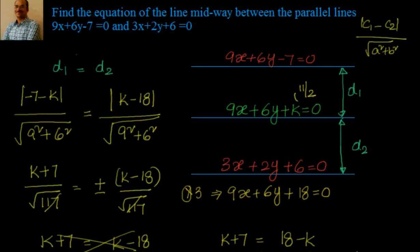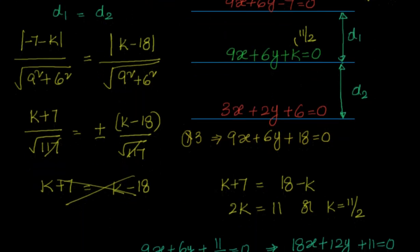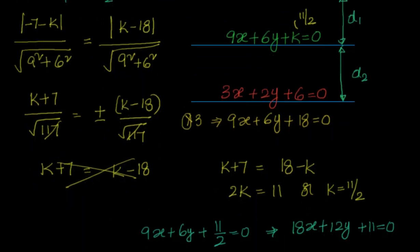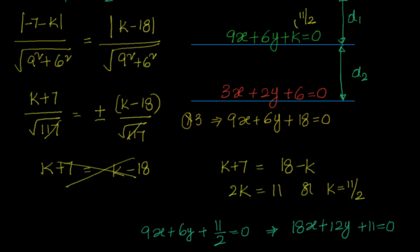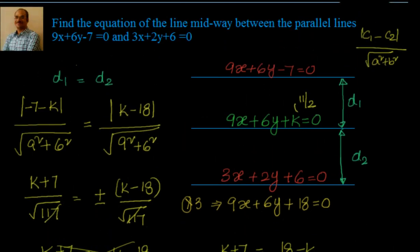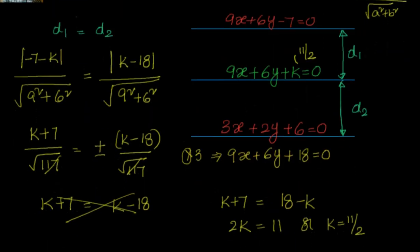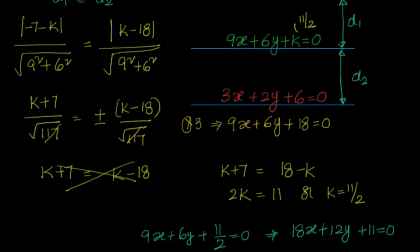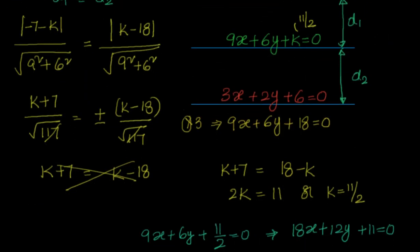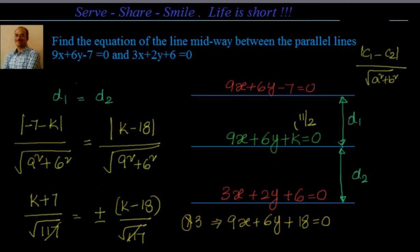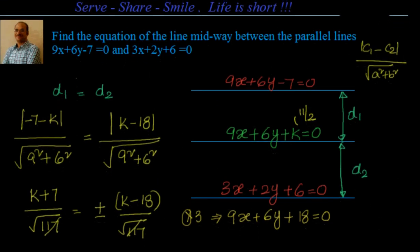We set d1 equal to d2, and by simplifying we find that k is equal to 11 by 2, giving the equation 9x plus 6y plus 11 by 2 equal to 0, or 18x plus 12y plus 11 equal to 0.